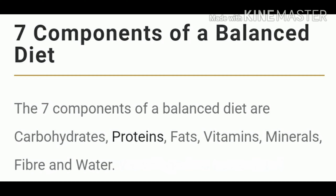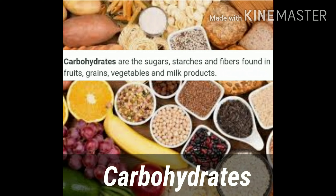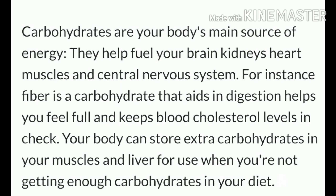The seven components of a balanced diet are carbohydrates, proteins, fats, vitamins, minerals, fiber, and water. Carbohydrates are the sugars, starches and fibers found in fruits, grains, vegetables and milk products. Carbohydrates are your body's main source of energy. They help fuel your brain, kidneys, heart, muscles and affect cholesterol levels. Fiber is a carbohydrate that aids in digestion, helps you feel full and keeps blood cholesterol levels in check. Your body can store extra carbohydrates in your muscles and liver for use when you're not getting enough in your diet.